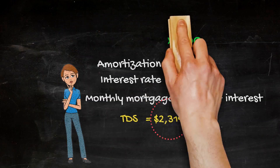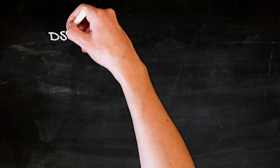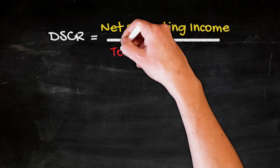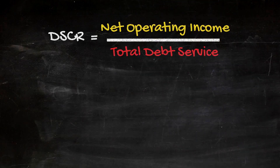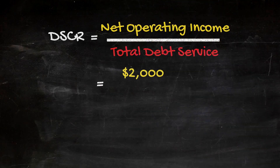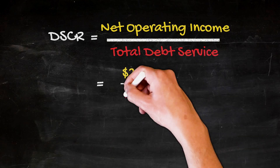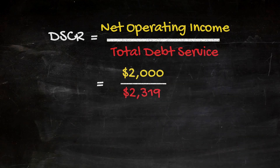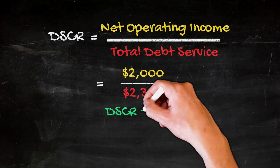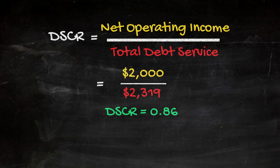Applying the DSCR formula, we would divide the monthly NOI by the monthly TDS, which is $2,000 divided by $2,319, resulting in a DSCR of 0.86.